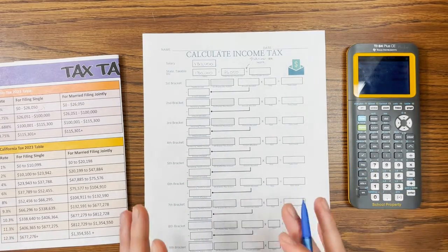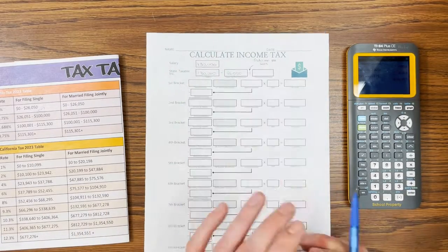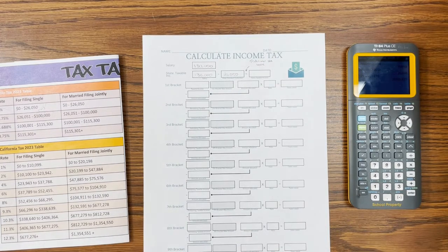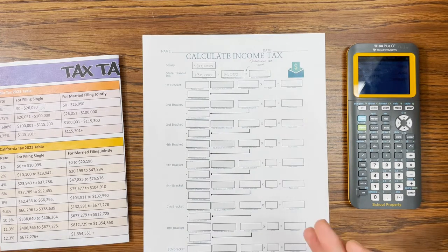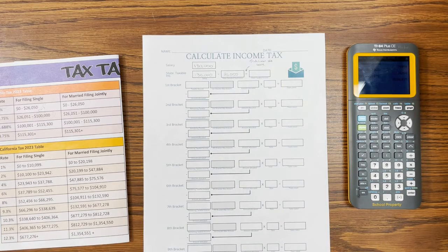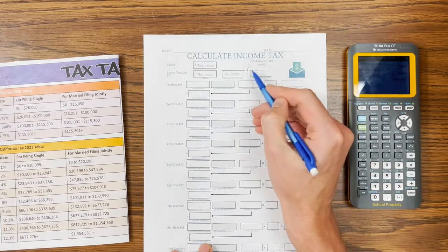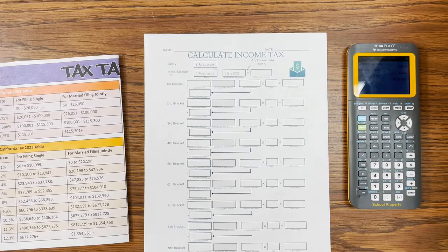And some states, not all, some states will also reduce your taxable income for contributions to accounts like that or maybe like a college savings plan, a 529. You do have to check with your individual state to see if they do allow you to deduct it or not. Most tax prep software will ask you that or an accountant will know that information very quickly. But that is just something worth knowing that you can deduct traditional contributions from your state income tax as well as your federal.